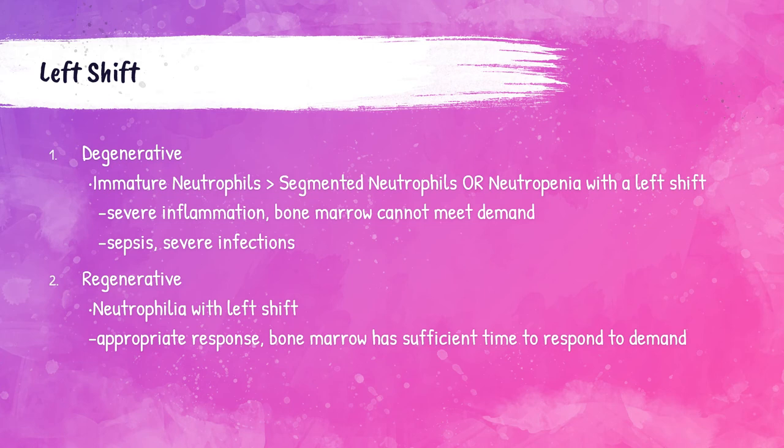The bone marrow is essentially overworked and can't meet the demand, so it starts trying to make as many neutrophils as possible. Therefore, there will be a lot of immature or 'baby' neutrophils, and it will push those out into the peripheral bloodstream prematurely. This happens in severe infections with severe inflammation, like sepsis.